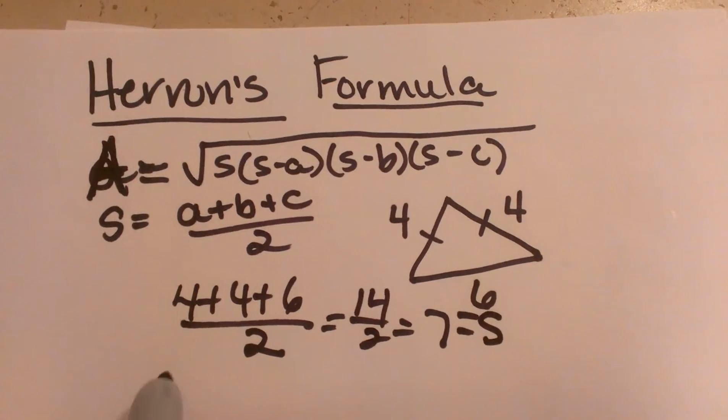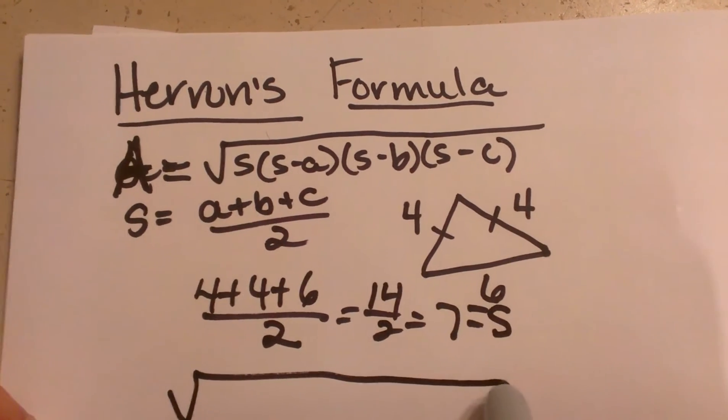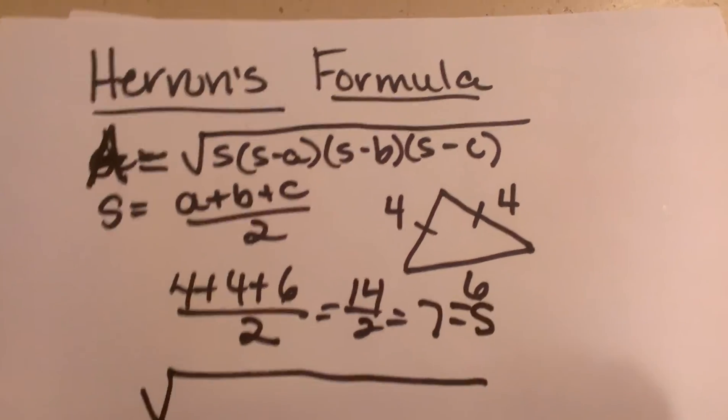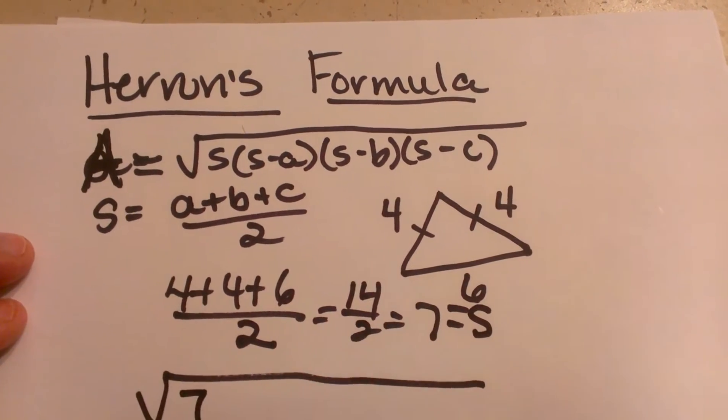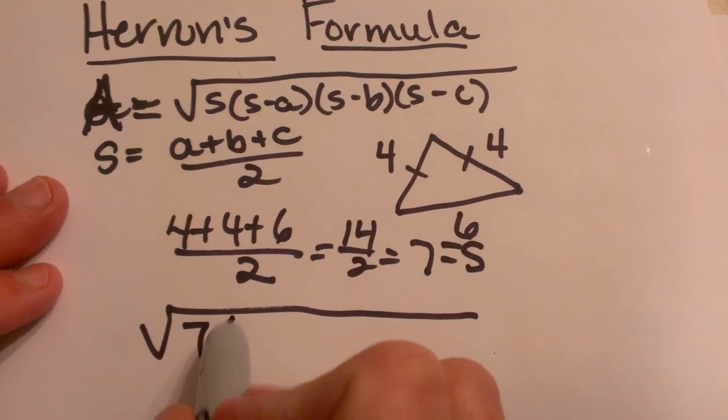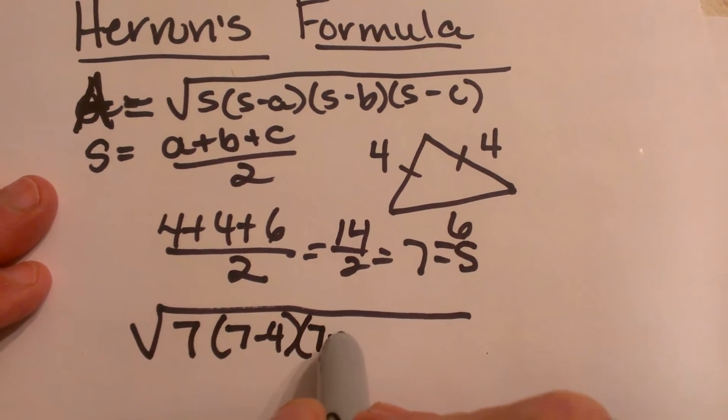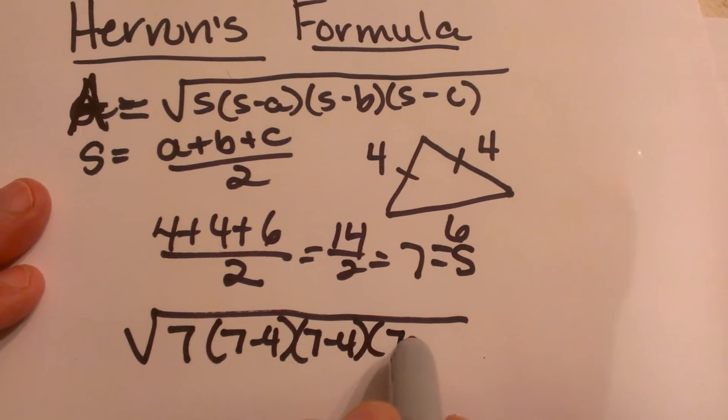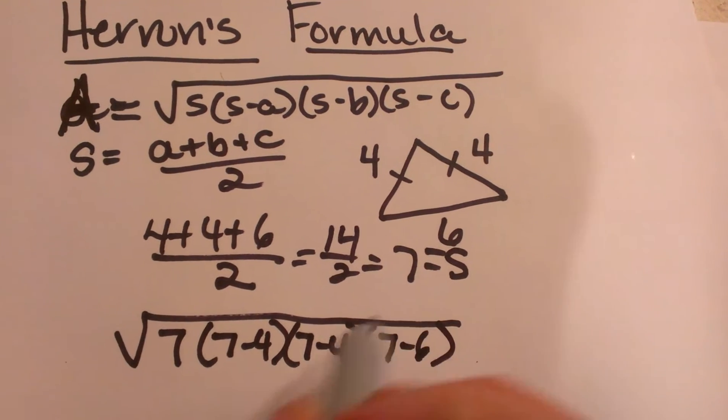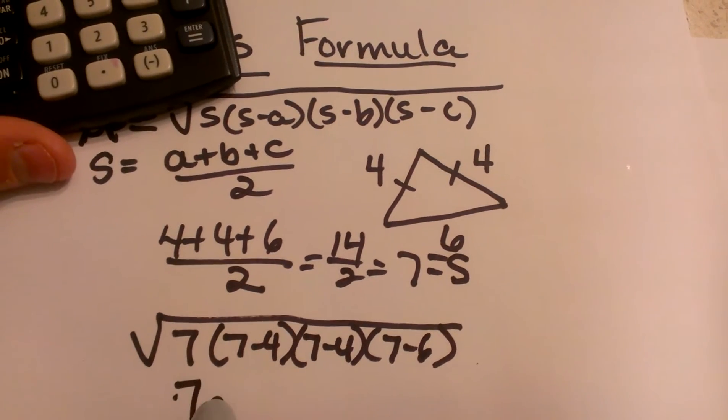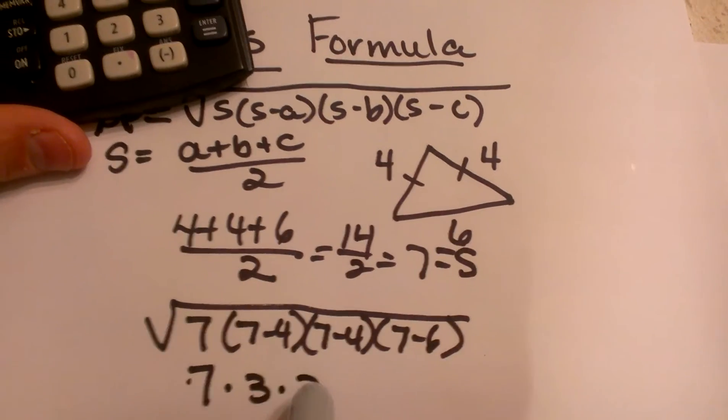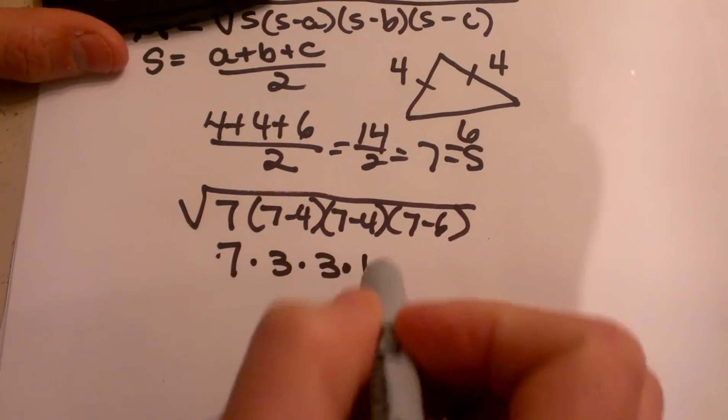Now let's plug it into the formula. I'm going to take the square root of 7 times 7 minus 4, 7 minus 4, and then 7 minus 6. So once I simplify that I'm going to have 7 times 3 times 3 times 1.